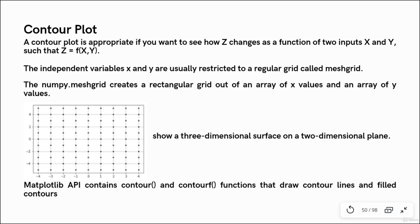This is just an example you can see — it's a three-dimensional surface on a two-dimensional plane. The plane is two-dimensional but the surface is three-dimensional. Now there are two types of contour plot functions: one is contour and the other is contourf. The difference is that the first one will draw the contour lines and the other one will give us a filled contour. So depending on what type of contour plot you want, you can select the option.